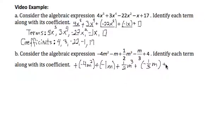plus 4. So let's be sure we got all the pluses and minuses right. So negative 4m squared has a negative, negative m becomes negative 1m, 1 half m cubed is just positive, negative m over 3 becomes negative 1 third m as a term, and then plus 4.